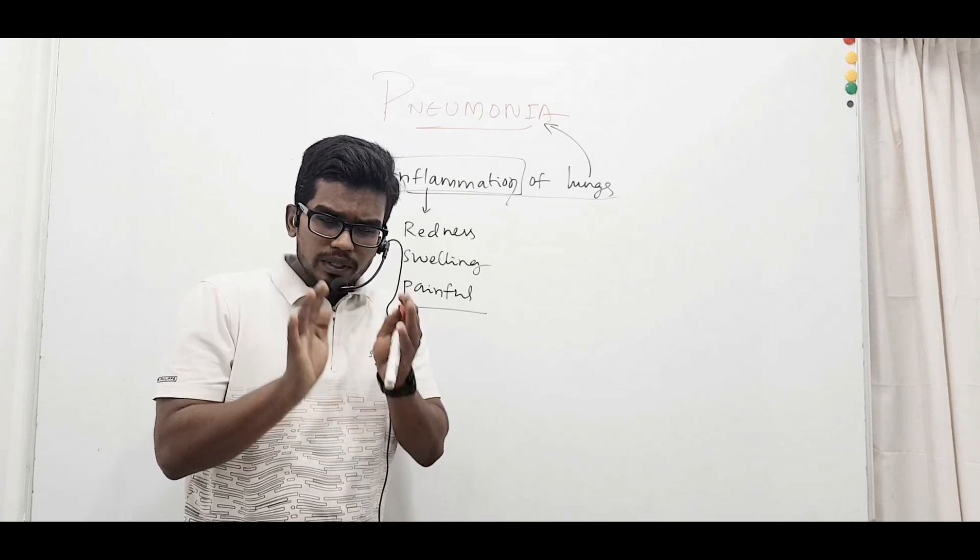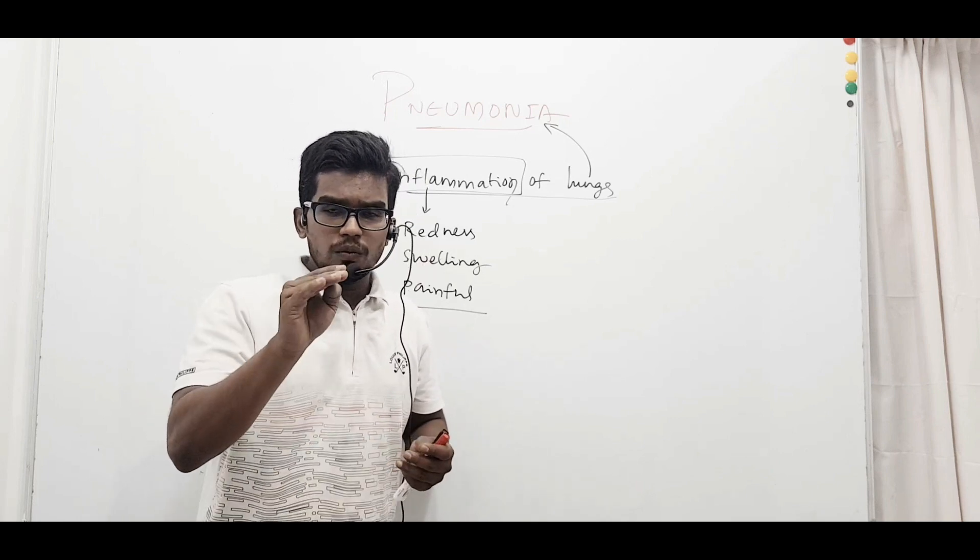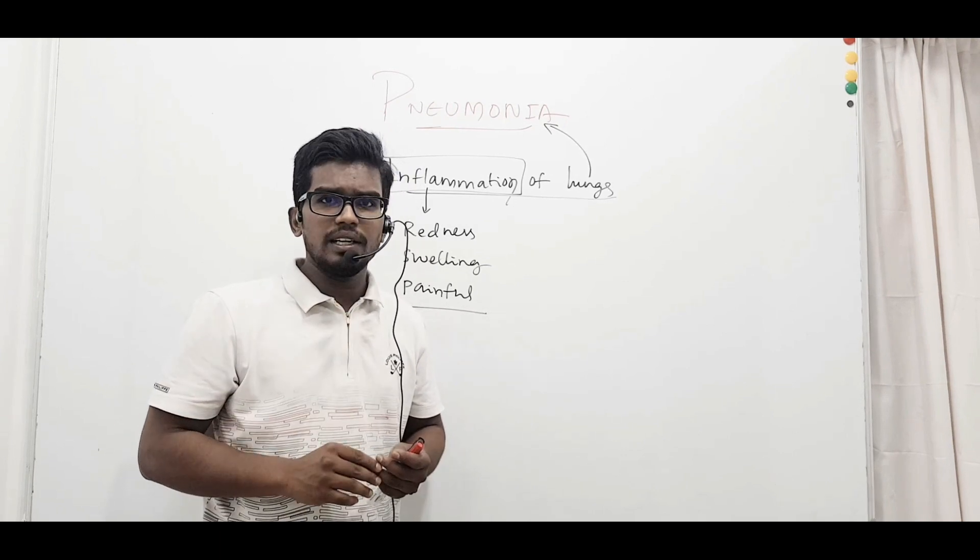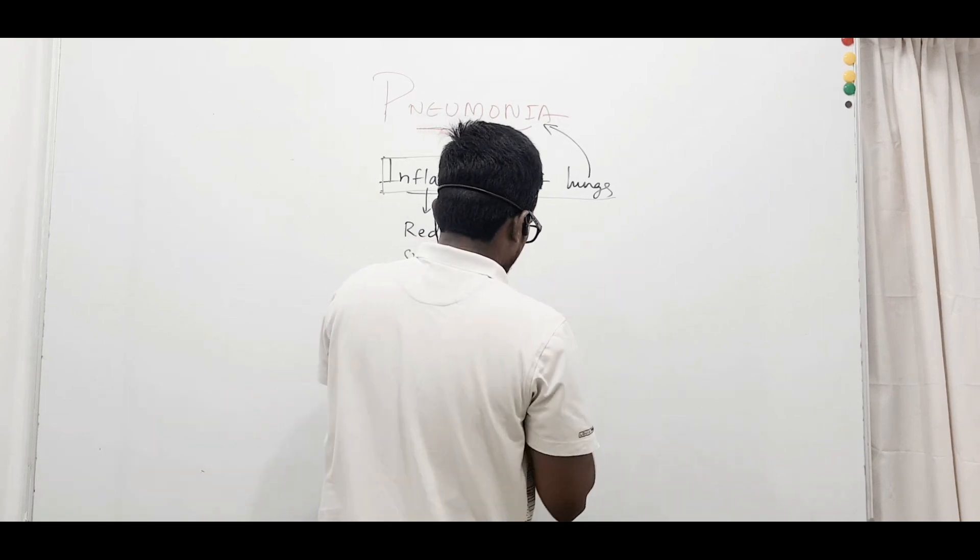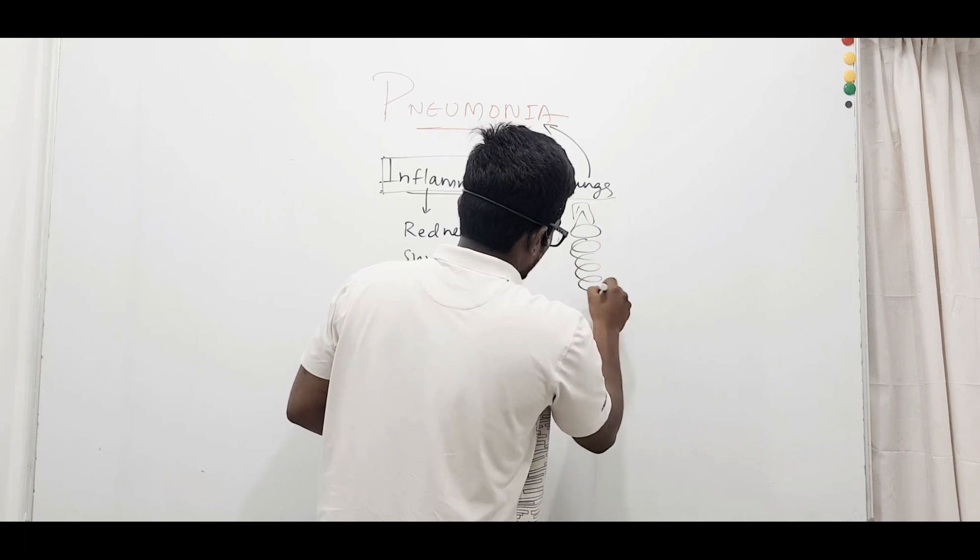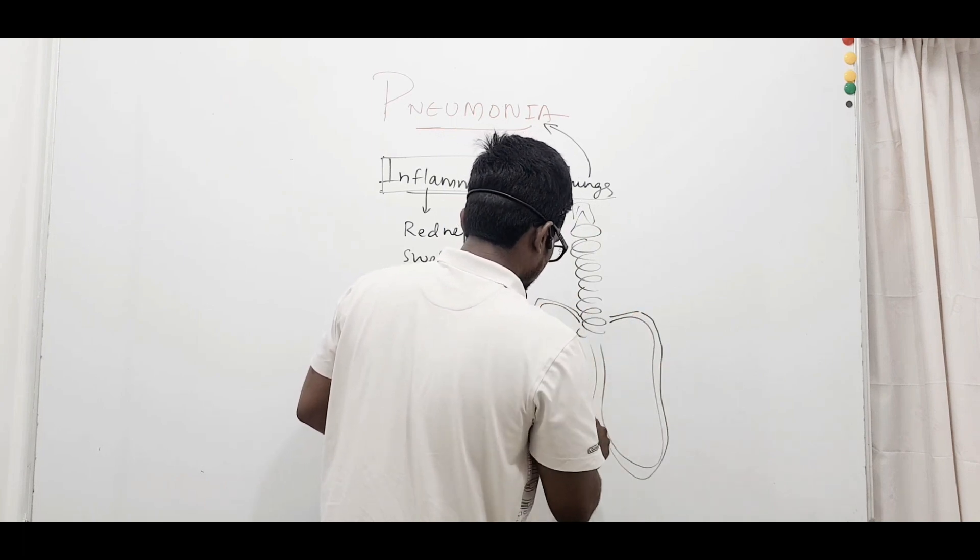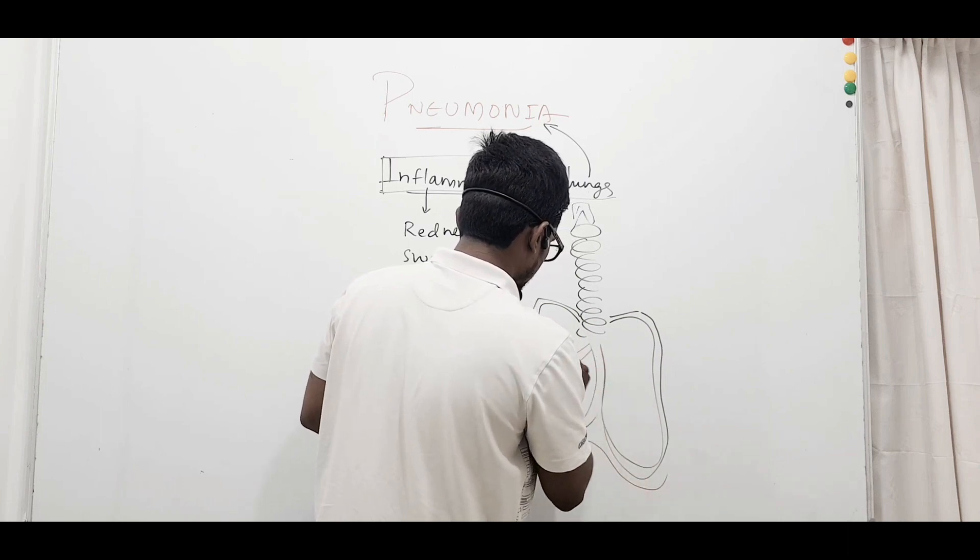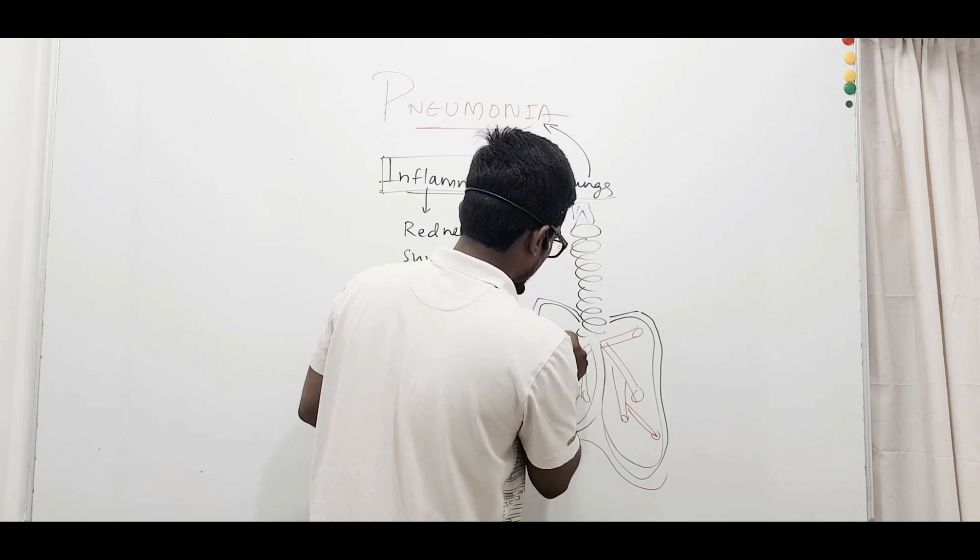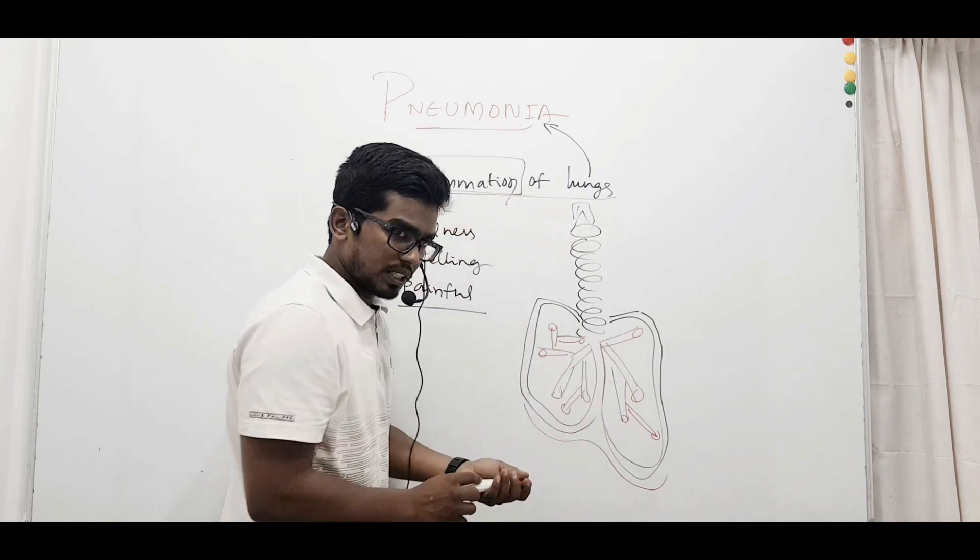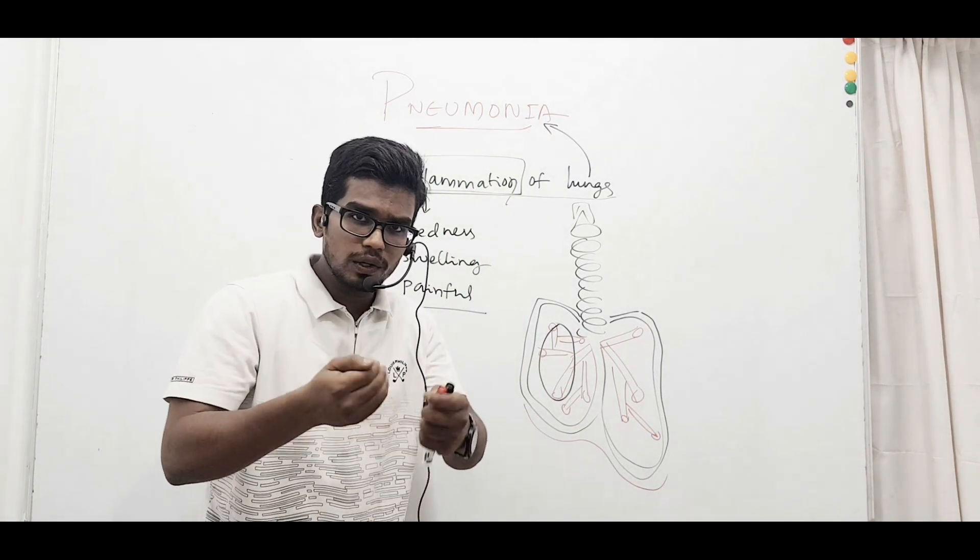When the lungs become inflamed, the oxygen-carrying capacity by the blood will be decreased because there is no supply of oxygen from the lungs. Let me show you—here we have the lungs, a rough structure. Here particularly you can see inflammation in any one part of the lung.